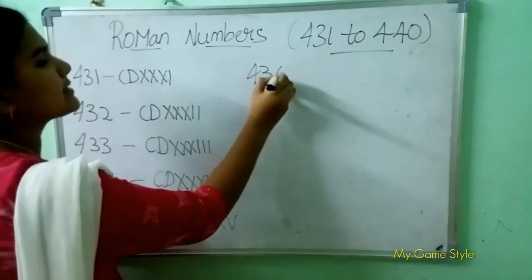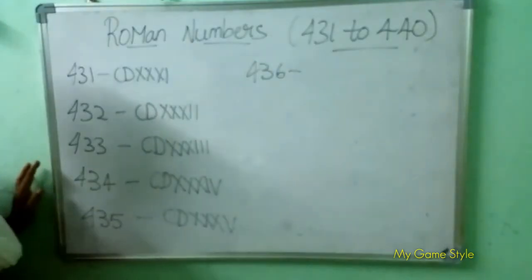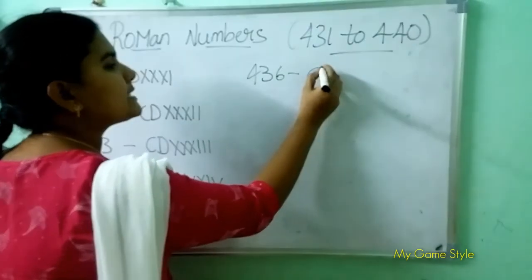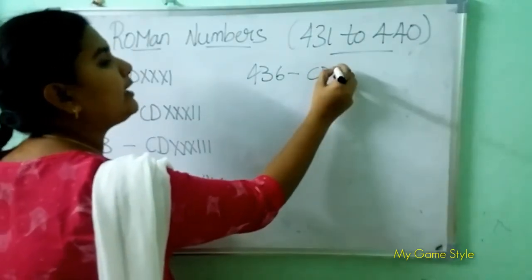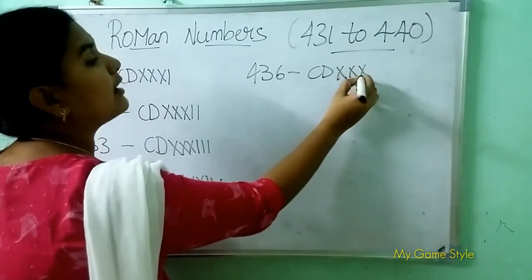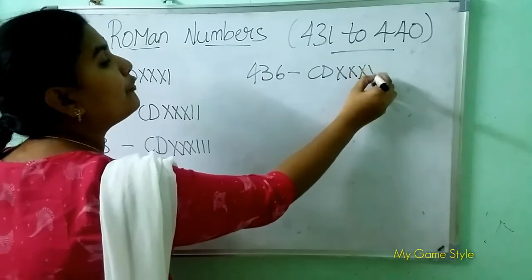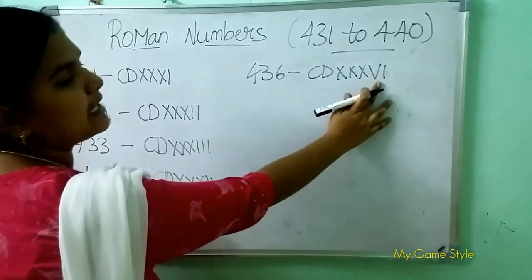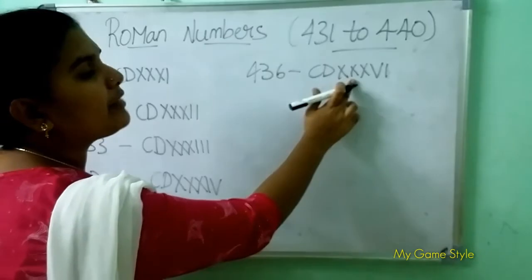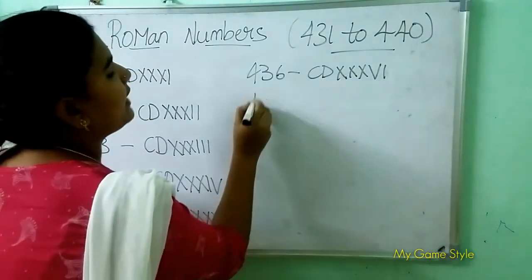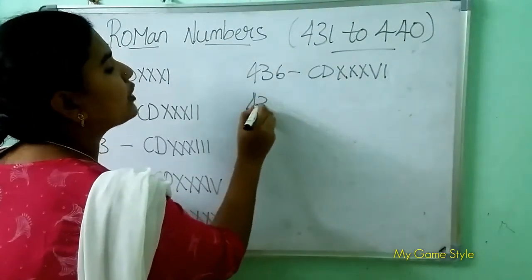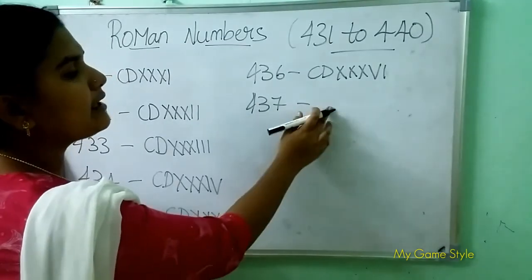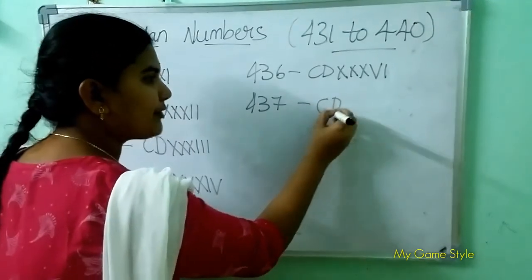436 — how to write 436? CD is 400, triple X is 30, VI is 6. So this means 436.